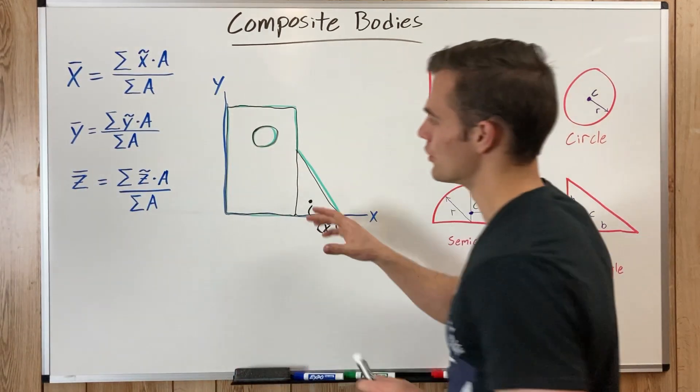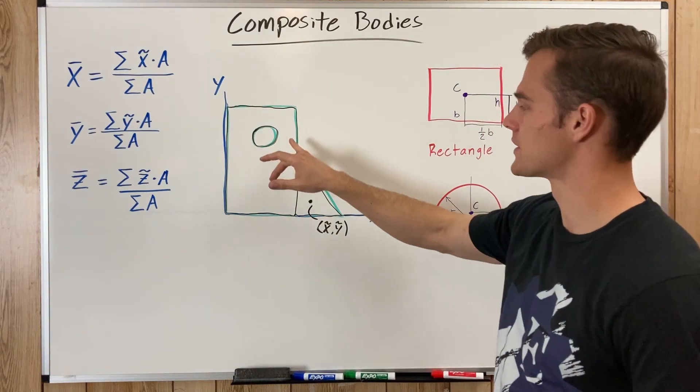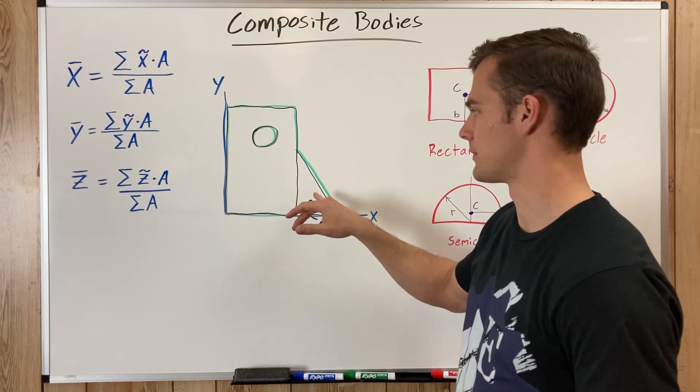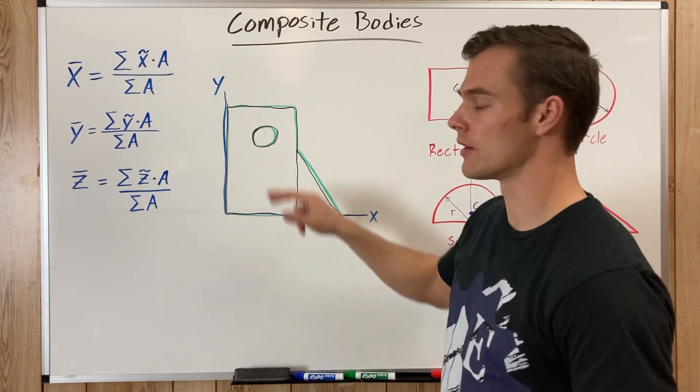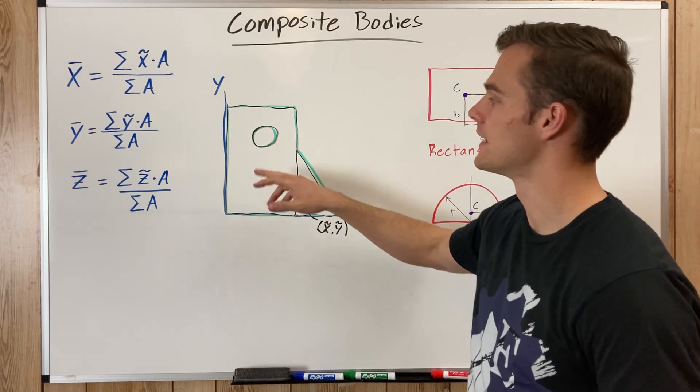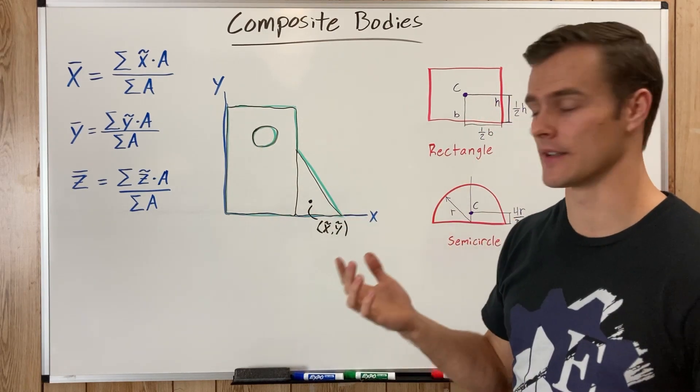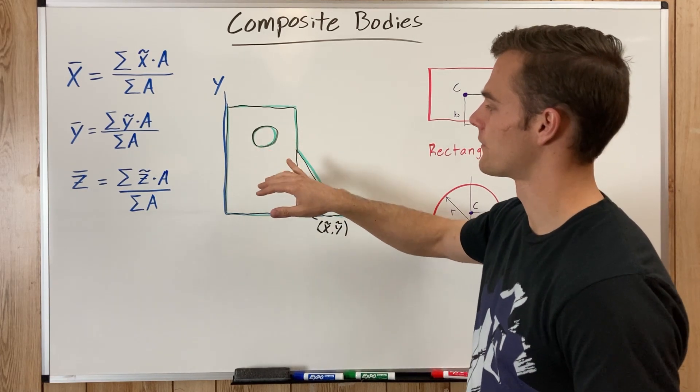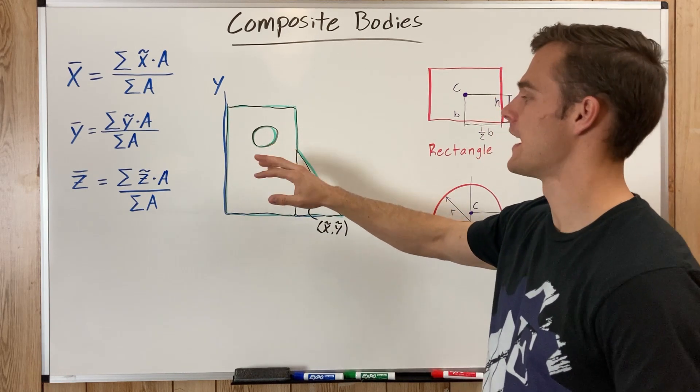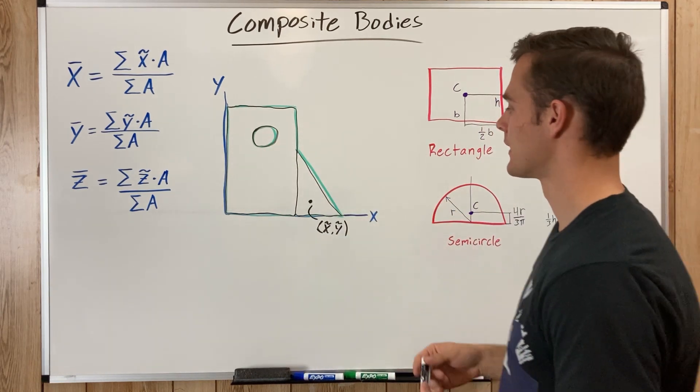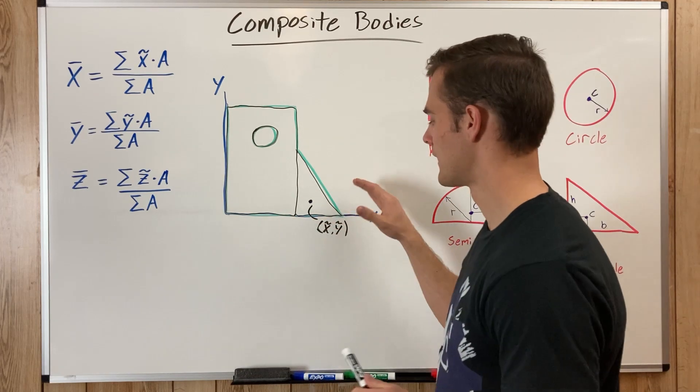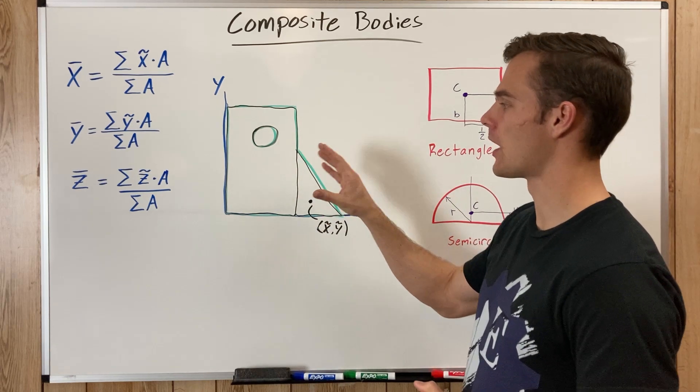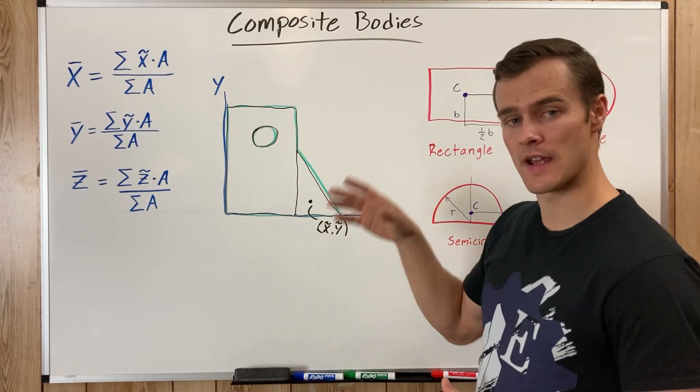So you'd find that for each of our shapes, and then once you did that, you would find the area of each one of these shapes. Now, with our hole in the middle, the area for this circle is going to count as negative area, because it is a hole. But you will still need to find its x and y coordinates for its center of mass, as well as its area. So, once we, I would recommend listing out all the x and y coordinates of each component, and then listing out the areas of each component.